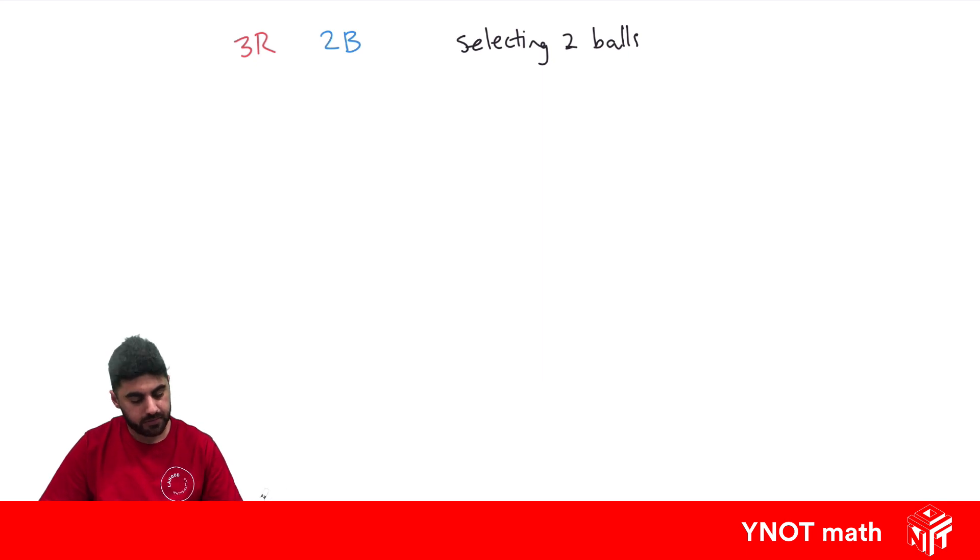And let's draw a tree diagram to represent this information. So we've only got two options. We can either pick out a red or a blue ball. So that's exactly what we've got, red or blue.